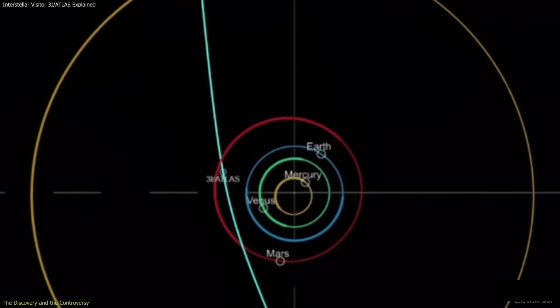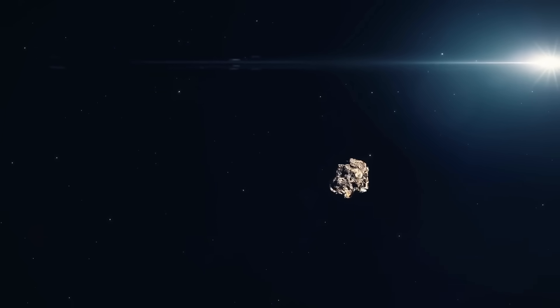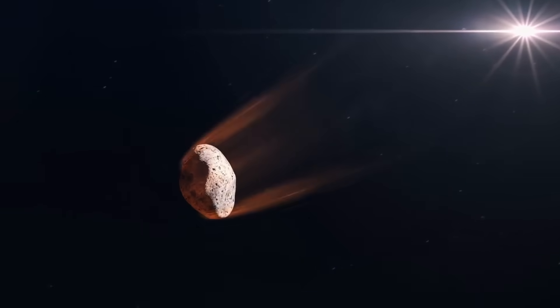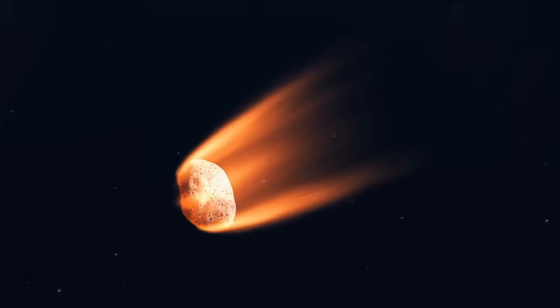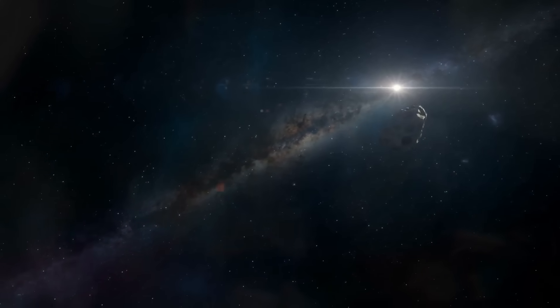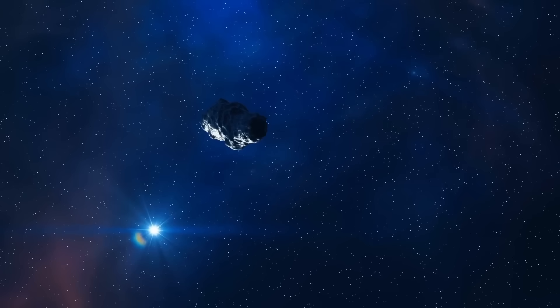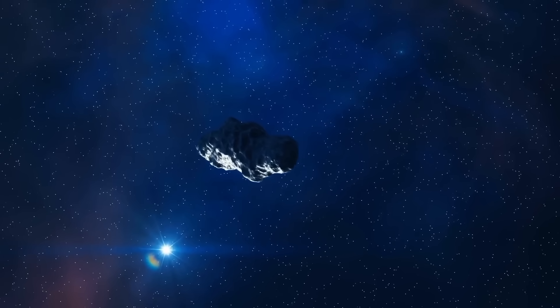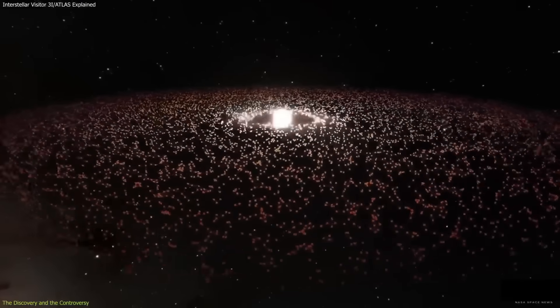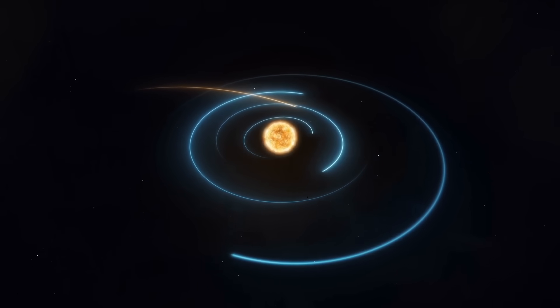For now, scientists and soldiers alike wait and watch. The telescopes keep gathering light. The Space Force keeps its alerts active. And the world wonders what an emerald green comet from another star might mean. Perhaps it is only a chemical quirk, a natural comet made in a different kind of nursery. Or perhaps it is something more, a sign that we are not alone in the galaxy. Whatever the truth, 3i Atlas has already changed us. It has reminded us that the universe is not predictable, not safe, and not finished surprising us.